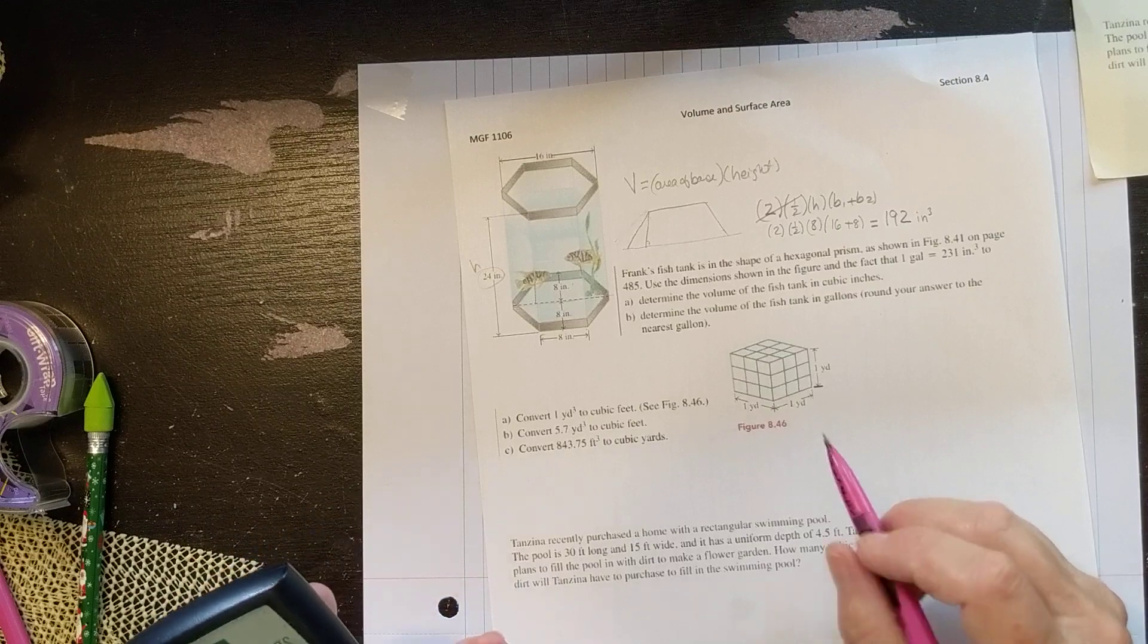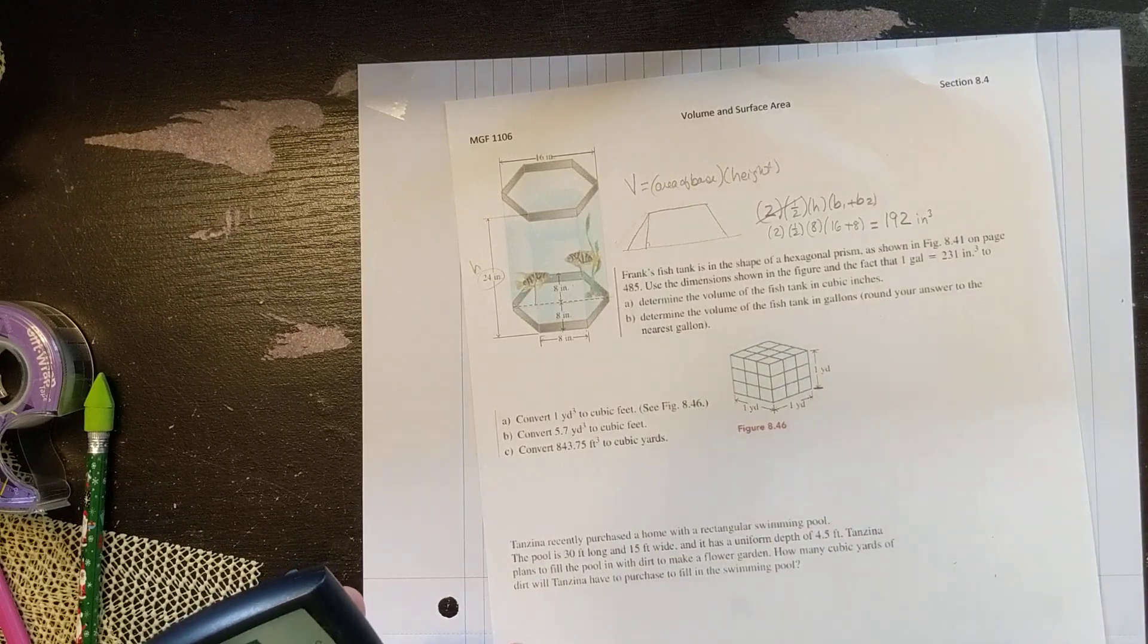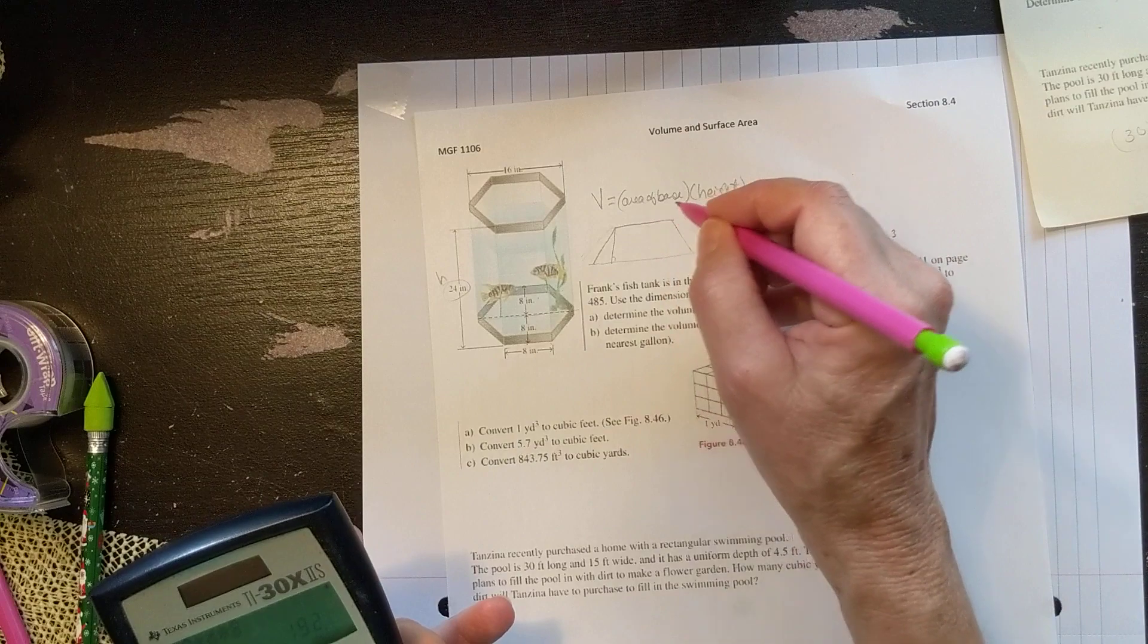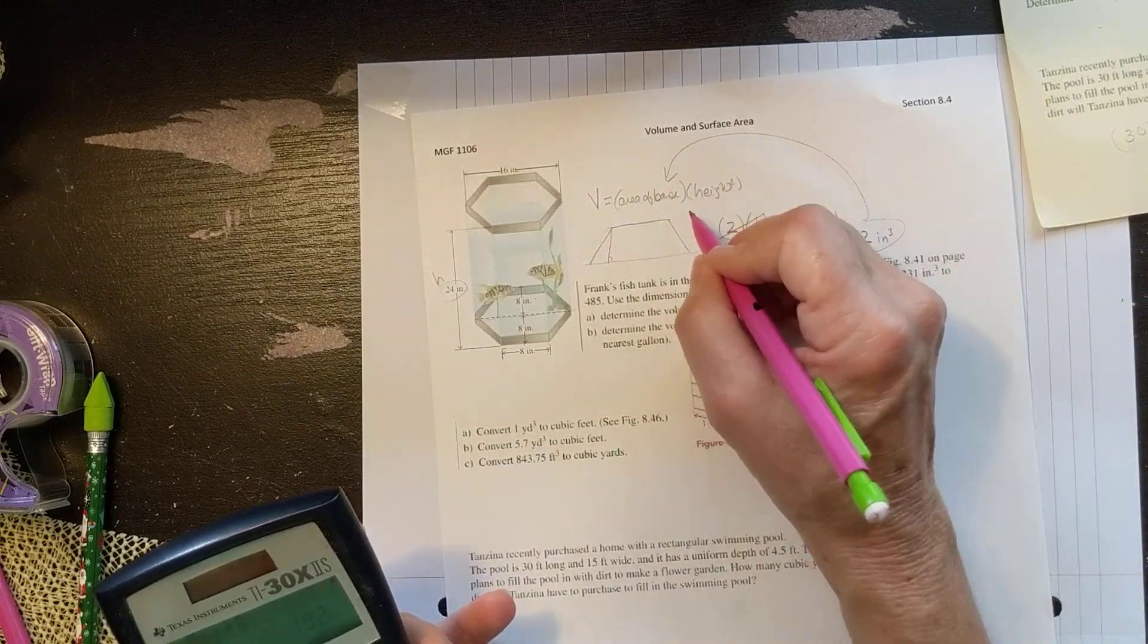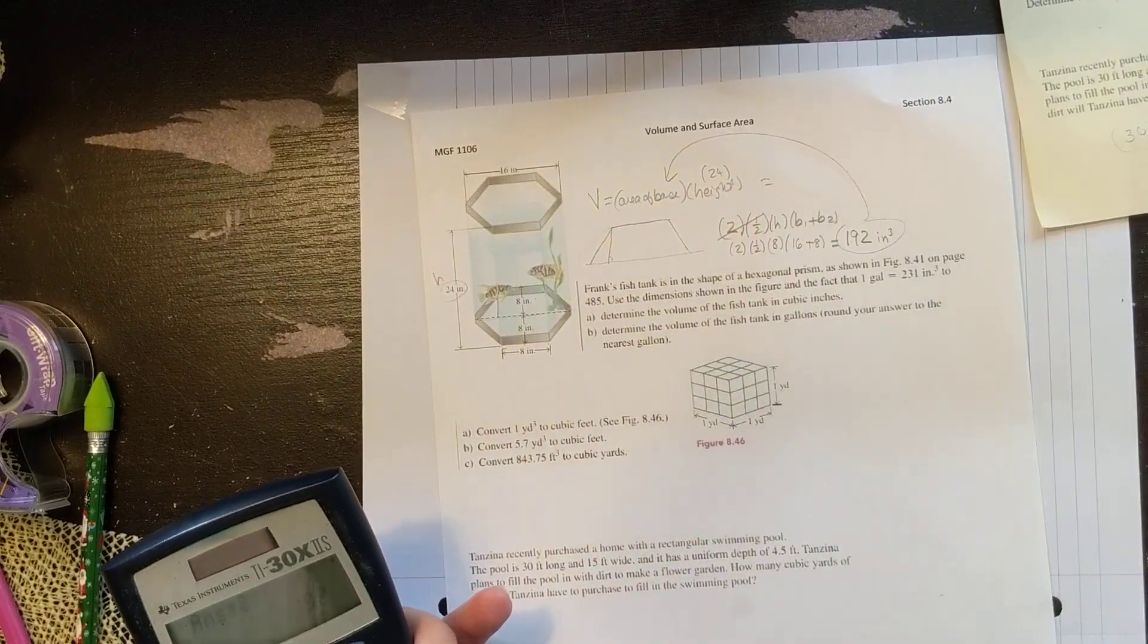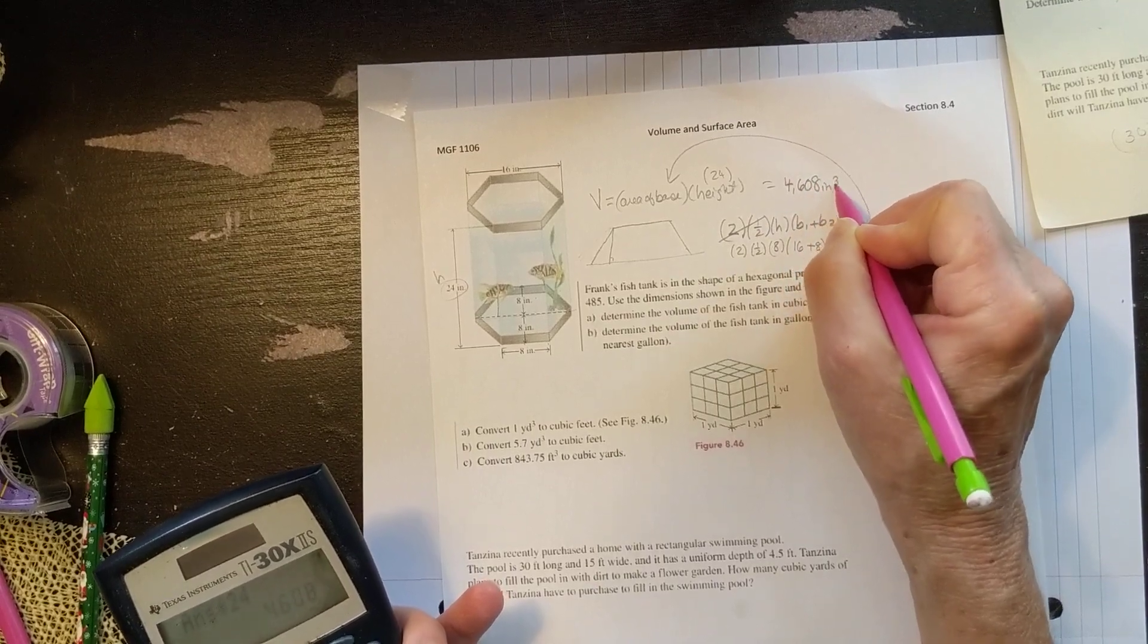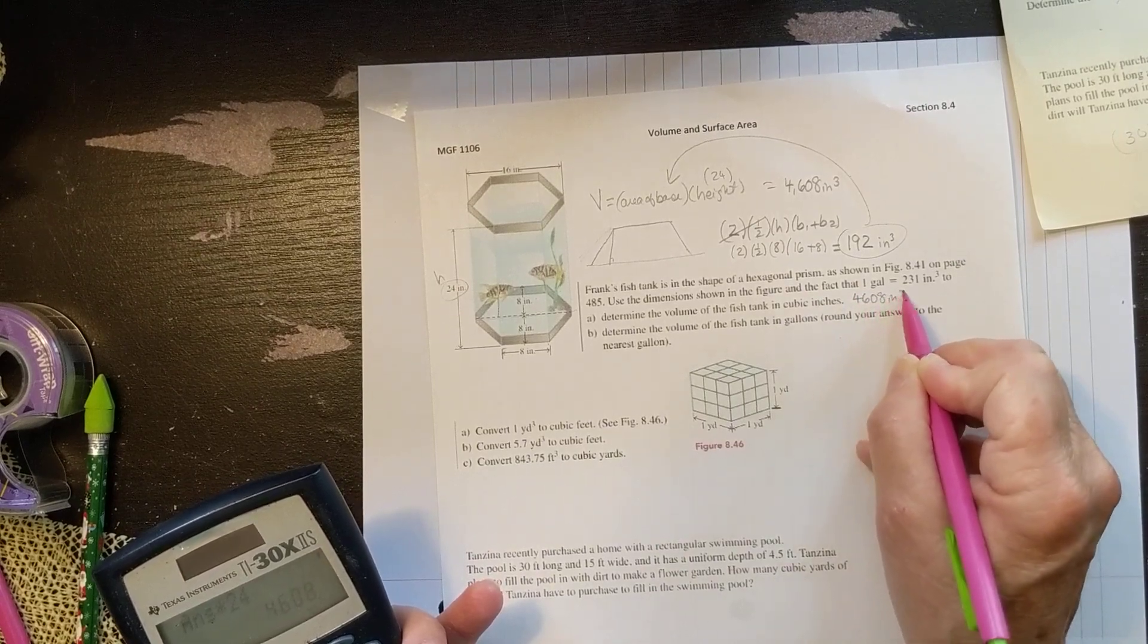So that is the volume, wait, no, because that was just the hexagon. That is the area of the base. And now I'm going to multiply that by the height of the tank, which is 24. So when I multiply 192 times 24, I'll get the volume of the tank, which is 4,608 cubic inches. So this is the answer to A, 4,608 cubic inches.